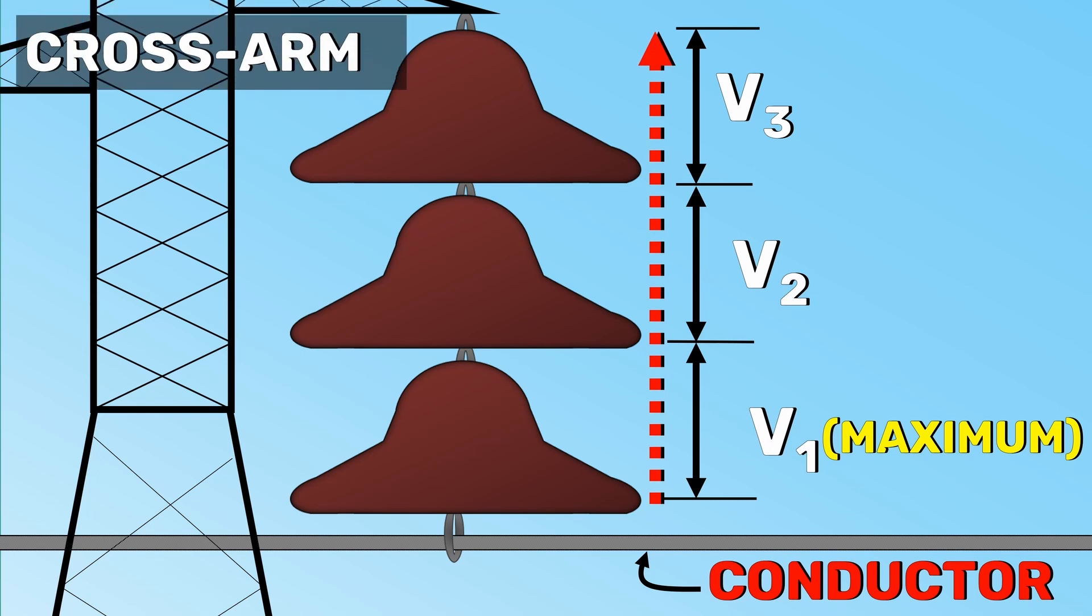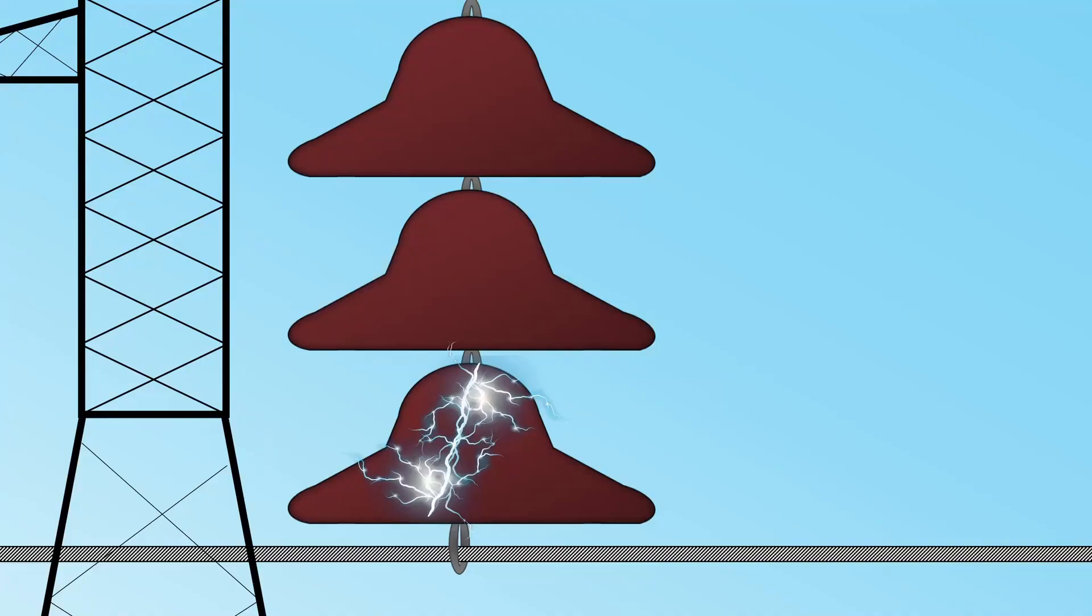The disc nearest to the conductor has a maximum voltage across it. As we move towards the cross arm, the voltage across each disc goes on decreasing. Therefore, the unit nearest to the conductor is under maximum electrical stress and is likely to be punctured. To avoid this,